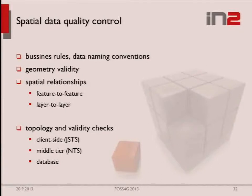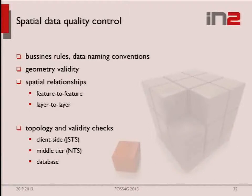This is a very serious and official system, so we had significant demands on spatial data quality control. We have a set of business rules and data naming conventions to follow. Geometry validity is checked on the client side for performance. For more complex topology checks — especially layer-to-layer topology and hierarchical checks — we use database stored procedures. On the middle tier we use JTS port and NTS for several other checks. We can say we have a three-way quality control on our system.